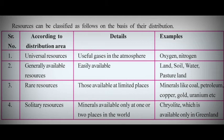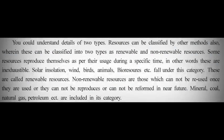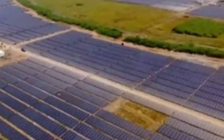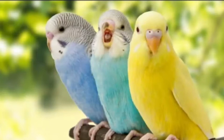Now let's see how resources are classified on the basis of re-availability. On the basis of re-availability, resources can be classified as renewable and non-renewable resources. The resources which can be reproduced naturally or can be sustained are called renewable resources — in other words, they are inexhaustible resources. Examples are solar power, wind, water, birds, etc.